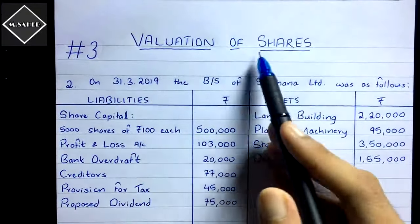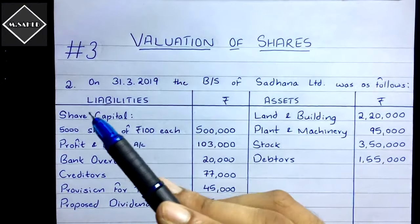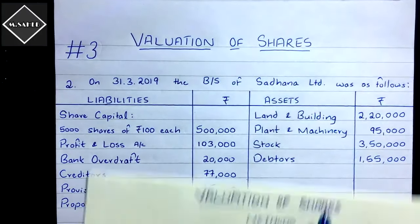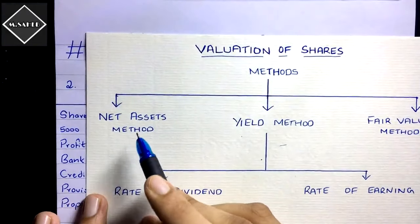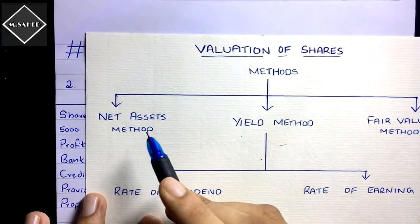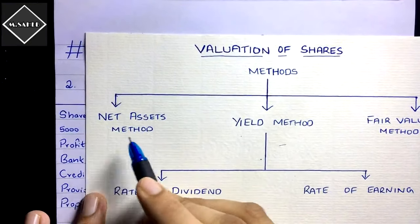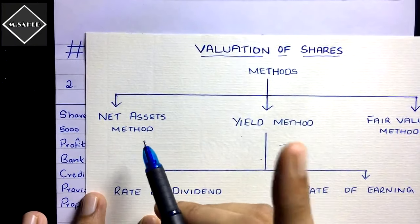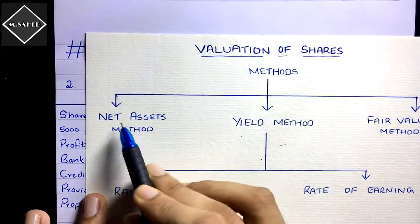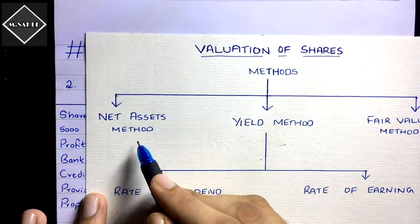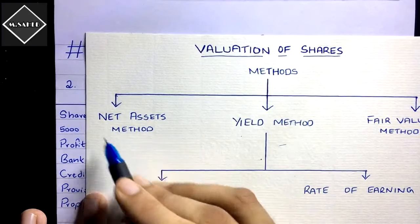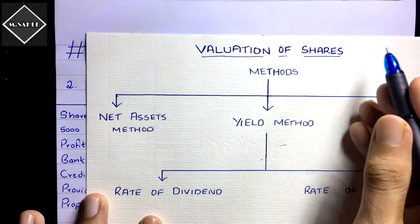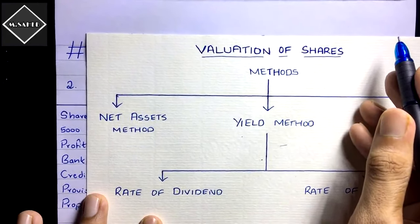Hi everyone, this is the third video of the Valuation of Shares chapter. In the previous two videos we covered the concept of valuation of shares and solved a problem using the net assets method, also known as the intrinsic value method. We saw the formula, how the method works, and most importantly how to calculate net assets available for equity shareholders. Please watch the previous video before proceeding — I'll put the link in the description and in the I-button.